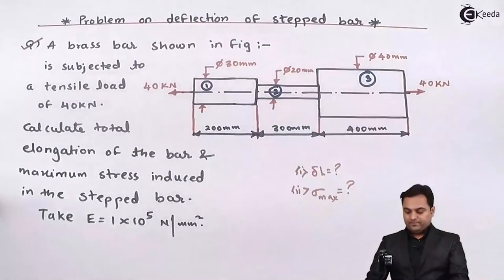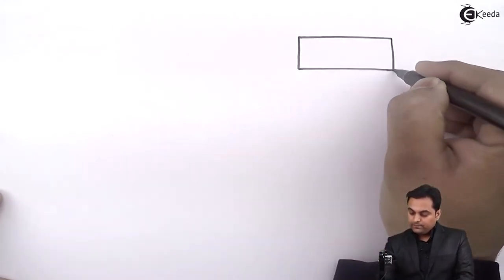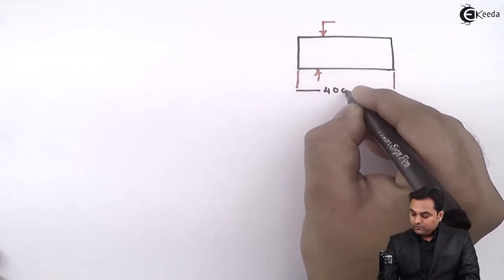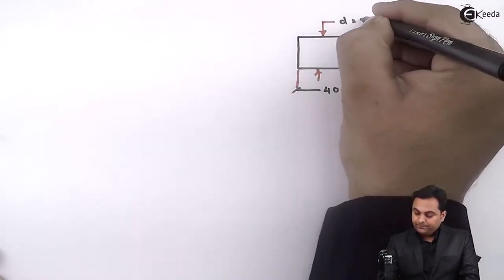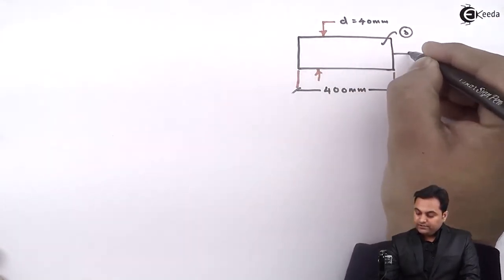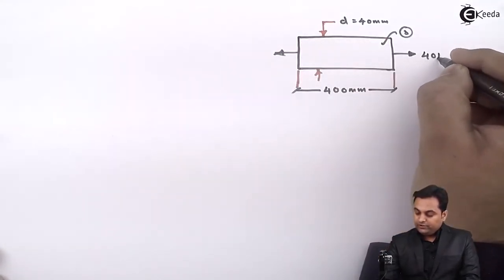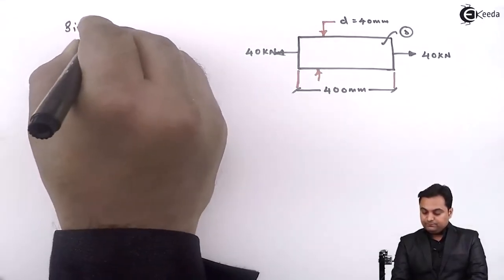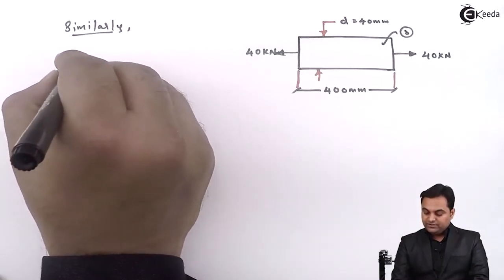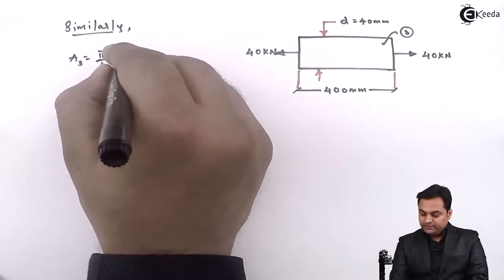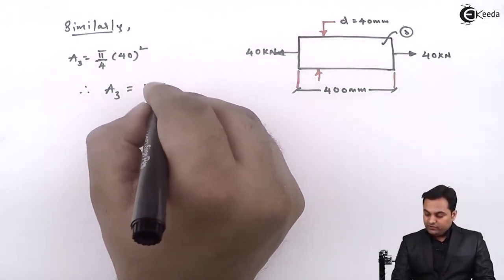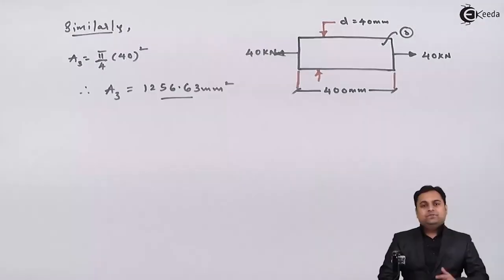Now separating the third section: it has a diameter of 40 mm and a length of 400 mm. It is also subjected to the tensile load of 40 kilonewton. Cross-sectional area A3 = π/4 × 40² = 1256.63 mm².